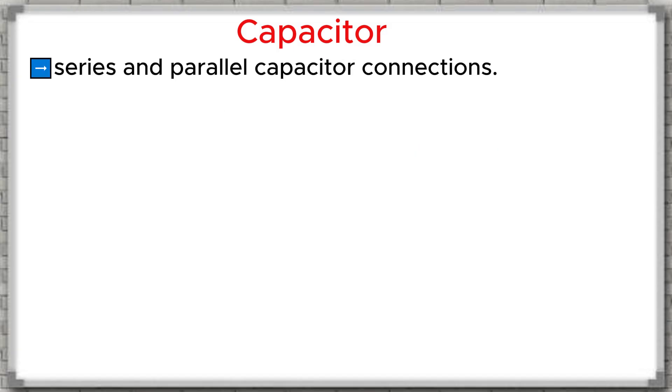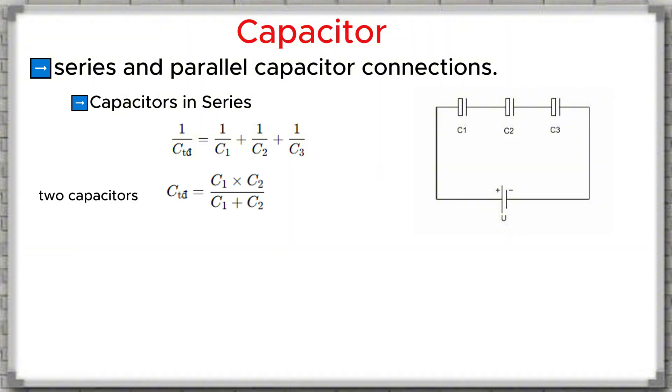Let's learn about series and parallel capacitor connections. First, capacitors in series: When capacitors are connected in series, the equivalent capacitance, C total, is calculated using this formula: 1 divided by C total equals 1 divided by C1 plus 1 divided by C2 plus 1 divided by C3. If there are only two capacitors in series, then the formula becomes C total equals C1 times C2 divided by C1 plus C2. When connected in series, the voltage rating of the equivalent capacitor is equal to the sum of the voltage ratings of all the capacitors. That is, U total equals U1 plus U2 plus U3. When connecting electrolytic capacitors in series, always pay attention to polarity. The negative terminal of the first capacitor must be connected to the positive terminal of the next capacitor.